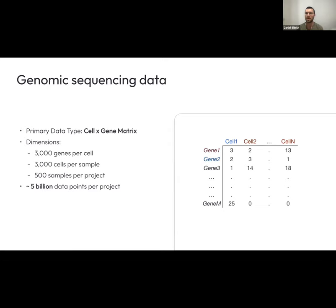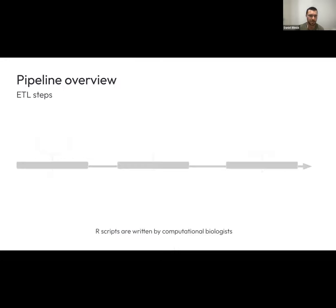For example, one patient might have a higher prevalence of T cells as opposed to B cells, and that tells us something — when we know that patient responded to a treatment, we know that alignment of signatures might be playing a role. These matrices get really, really big in size — up to about 5 billion data points across a project. That's one of the challenges we deal with: scaling so that analysts can work with those data sets in a very efficient manner.